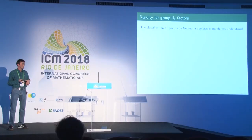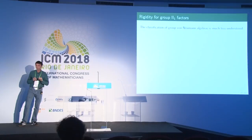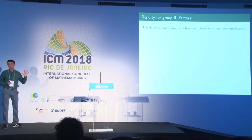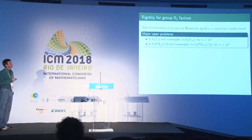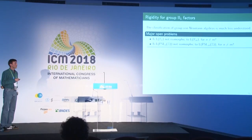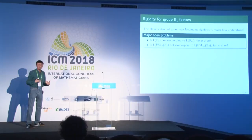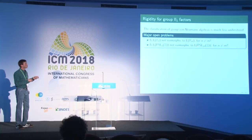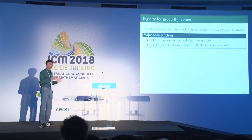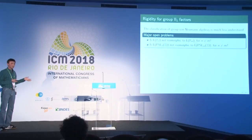In contrast, the classification of von Neumann algebras of groups is much less understood. Two major open problems: first, the free group factor problem — are L(Fₙ) and L(Fₘ) isomorphic for n ≠ m? Second, the same question for arithmetic groups: is L(PSLₙ(ℤ)) isomorphic to L(PSLₘ(ℤ)) for n ≠ m (with n, m ≥ 3)? Both problems are wide open, but have had great influence on the theory.